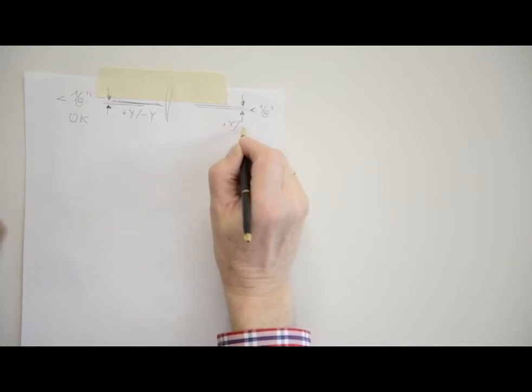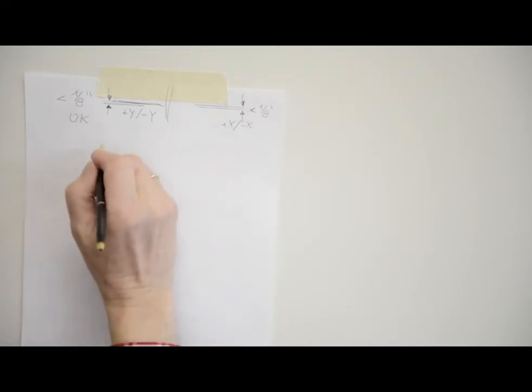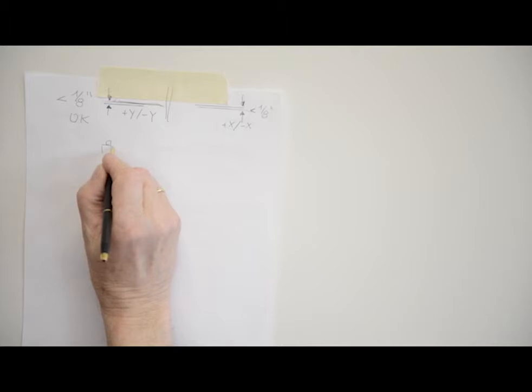Check the difference between the two X axis marks. If they differ more than the published accuracy for this laser, 1/8 of an inch or 3 millimeters for the LL300S, the laser needs calibrating on the X axis.